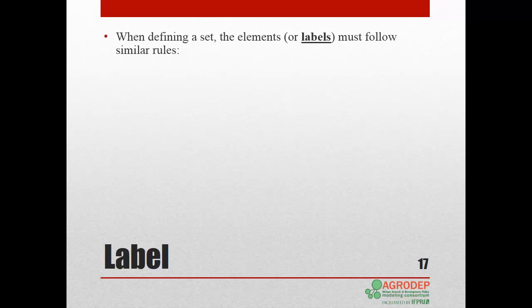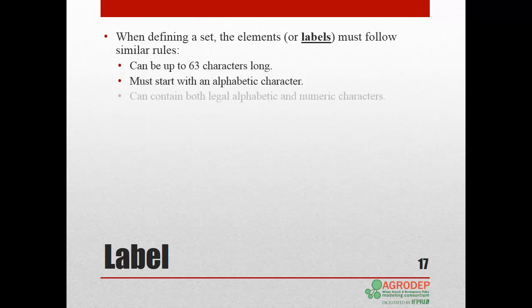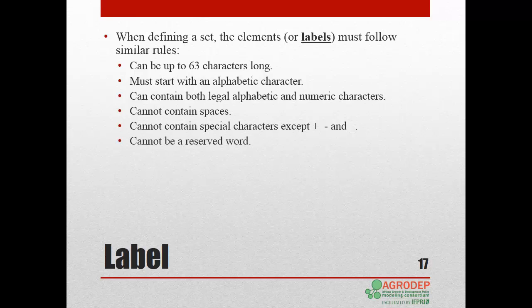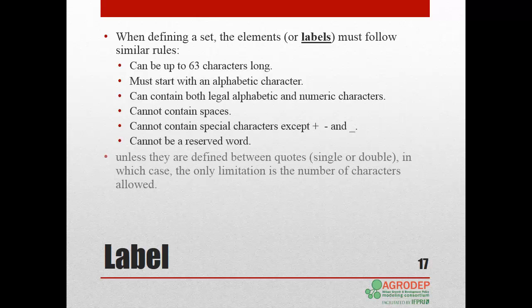When defining a set, the elements or labels must follow similar rules. They can be up to 63 characters long. They must start with an alphabetic character. They can contain both legal, alphabetic, and numeric characters. They cannot contain spaces. They cannot contain special characters except plus, minus, and underscore. They cannot be GAMS reserved words. These rules are relaxed when labels are defined between quotes, single or double, in which case the only limitation is the number of characters allowed.